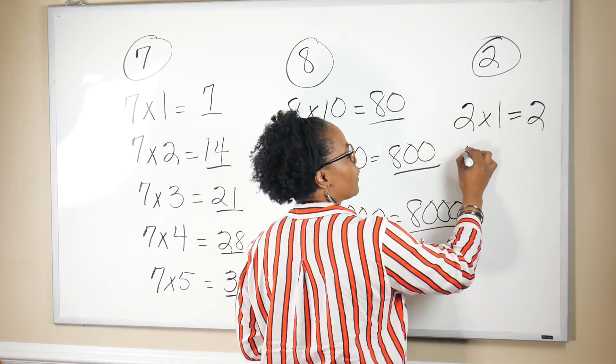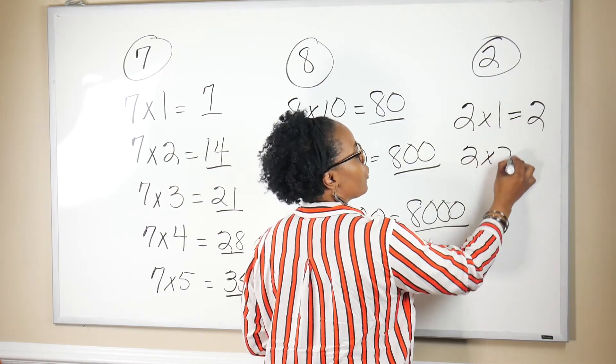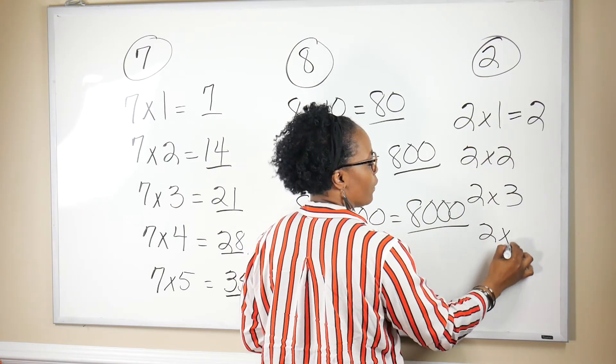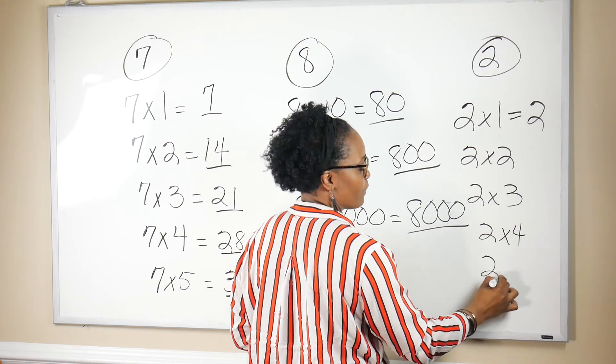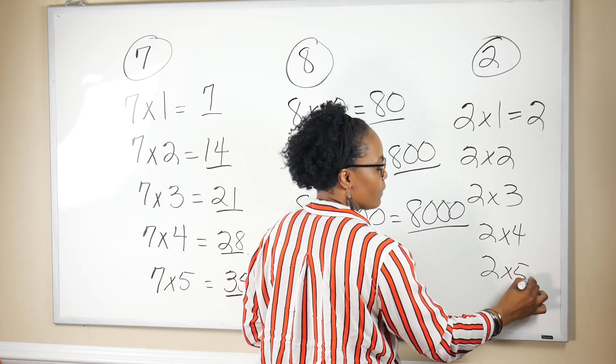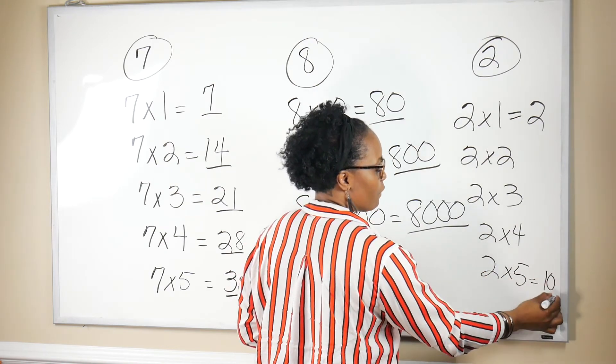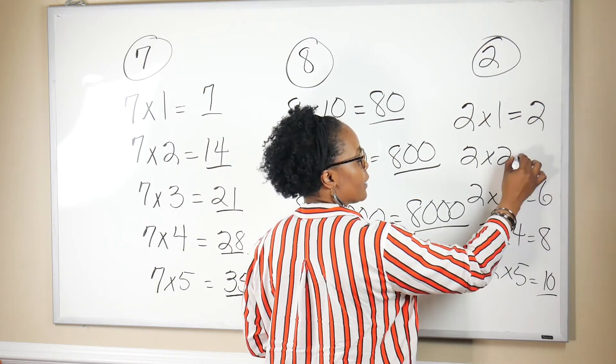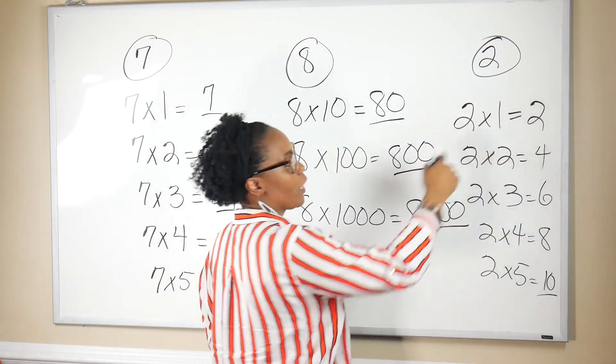You simply multiply two times one, two times two, two times three, two times four, and two times five. Two times five is 10, two times four is eight, two times three is six, two times two is four, and two times one is two.